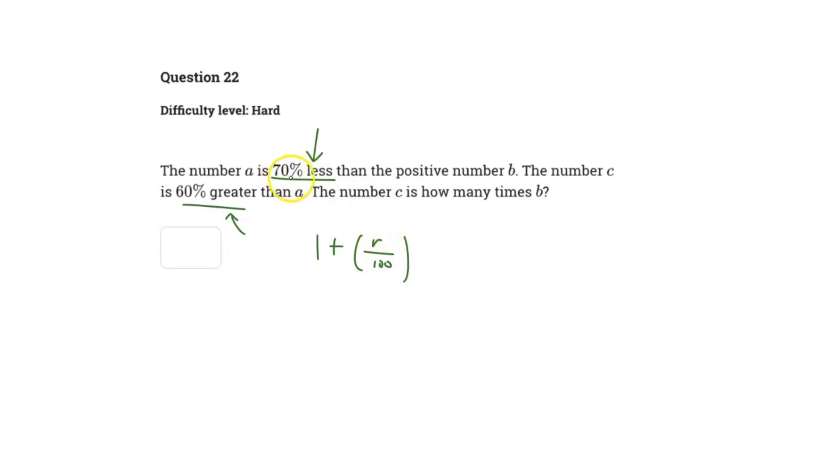Here we can insert 70% less, so R here would be negative 70. We'd ultimately get 1 plus negative 70 over 100, and this will give us a value of 0.3. That is essentially your percent multiplier.